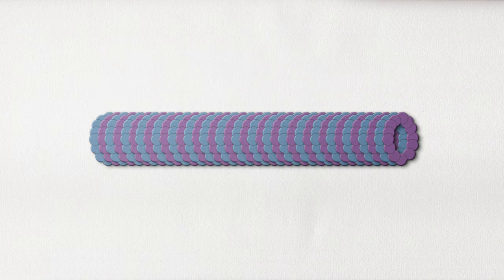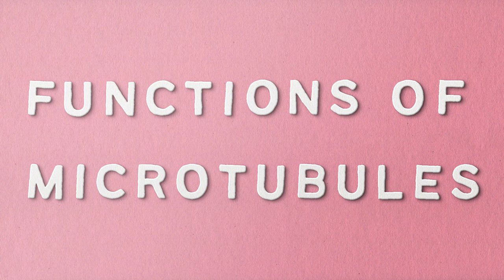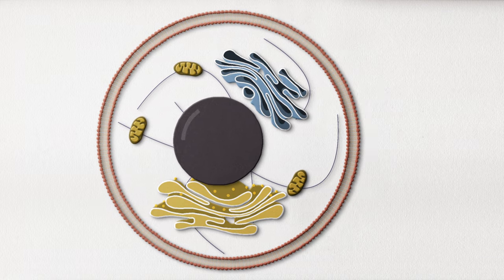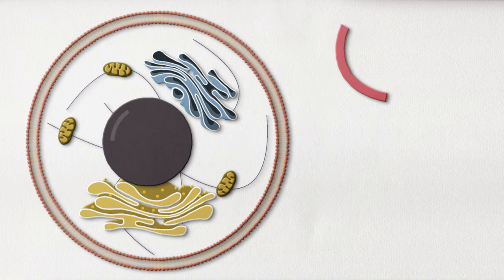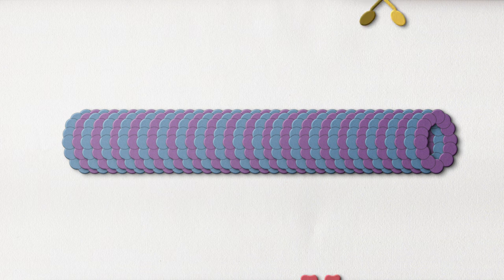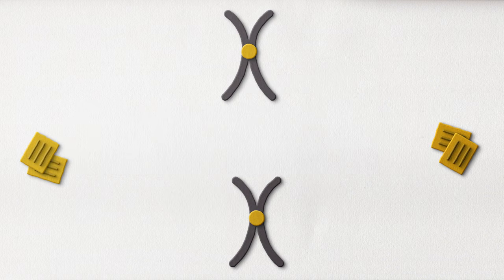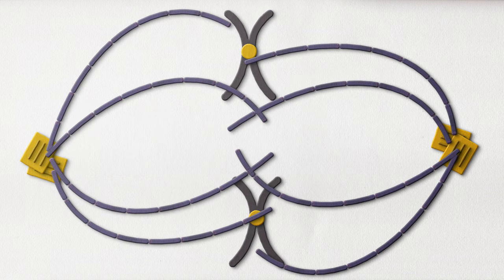Microtubules constantly change, coming together and breaking apart, but just because they're not permanently tubular doesn't mean they don't have an important job. Microtubules help the cell keep its shape, resisting against external compression and other forces working against the cell. They also help transport different motor proteins called kinesins and dyneins, as well as form the spindle that helps chromosomes split in cell division.